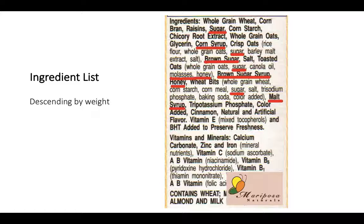Added sugar and naturally occurring sugar can happen together in the same product. Take chocolate milk, for example. It has naturally occurring sugars from plain white milk, but the moment you add chocolate powder or chocolate syrup, that becomes added sugar. The old food label couldn't tell you how much sugar came from the chocolate syrup versus the plain white milk. The new label will show that, allowing you to make better, smarter choices.